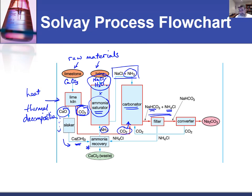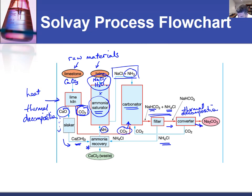We need to separate these two products, and we separate them on the basis of their differential solubilities as we cool them down. We precipitate out the ammonium chloride and push the sodium bicarbonate through. There is a second thermal decomposition step which results in the sodium bicarbonate becoming sodium carbonate. Sodium carbonate over here is our goal — it's our desired product.